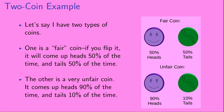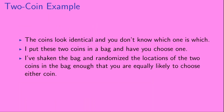So let's say I have two types of coins. One is a fair coin — if you flip it, it will come up heads 50% of the time and tails 50% of the time. The other is a very unfair coin — it comes up heads 90% of the time and tails 10% of the time. These coins look identical, and you don't know which one is which. I'm going to put these two coins in a bag and have you choose one. I've shaken the bag and randomized the locations enough that you are equally likely to choose either coin.